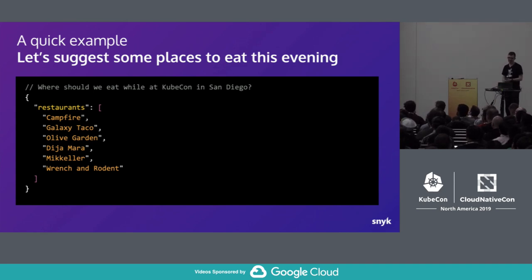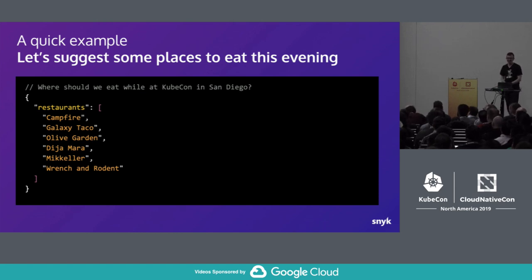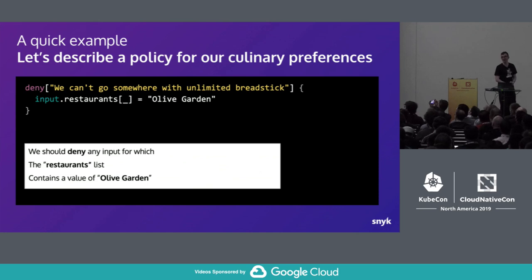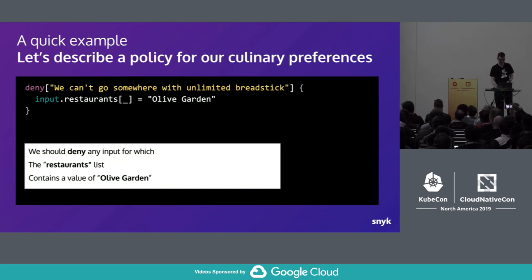Here's a quick example. Let's say we're having a conversation about where we're going to go for food this evening, and because we're at a software conference, we've decided to collect that list in a JSON document. We've listed some restaurants that we could go to. But I've got some opinions — I can't bear unlimited breadsticks. So I'm setting a policy which says we will fail, we will say we're out of policy, if Olive Garden is in that list. Totally unfair, but an example of the type of thing you can do. This is Rego — the policy language, the DSL we're using to make these assertions.